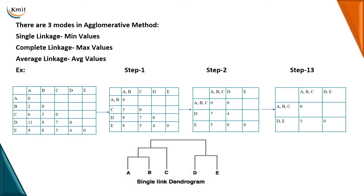Next is the divisive method. As I told you, the divisive method is a top-to-bottom method and it uses splits. The agglomerative method uses merging — the elements are separate and are merged together — but in the divisive method, all the data which is together is split separately. That is the reason it is a top-down approach.